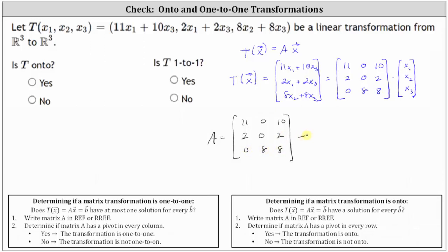The next step is to write the matrix in row echelon form or reduced row echelon form. I've already found the reduced row echelon form, where the first row is 1, 0, 0. The second row is 0, 1, 0. And the third row is 0, 0, 1.